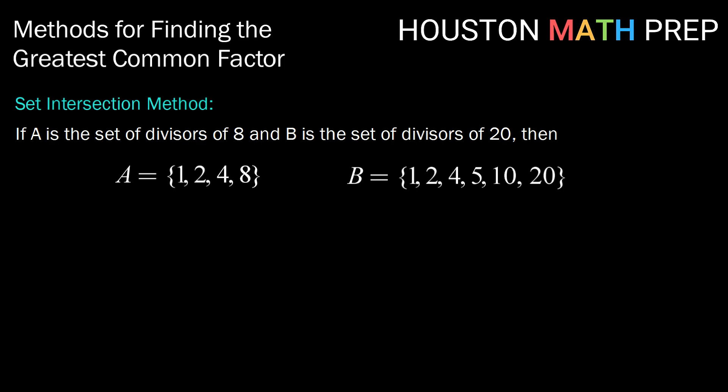Then A would be all the whole numbers that divide evenly into 8, namely 1, 2, 4, and 8. And B would be all the whole numbers that divide evenly into 20, namely 1, 2, 4, 5, 10, and 20.